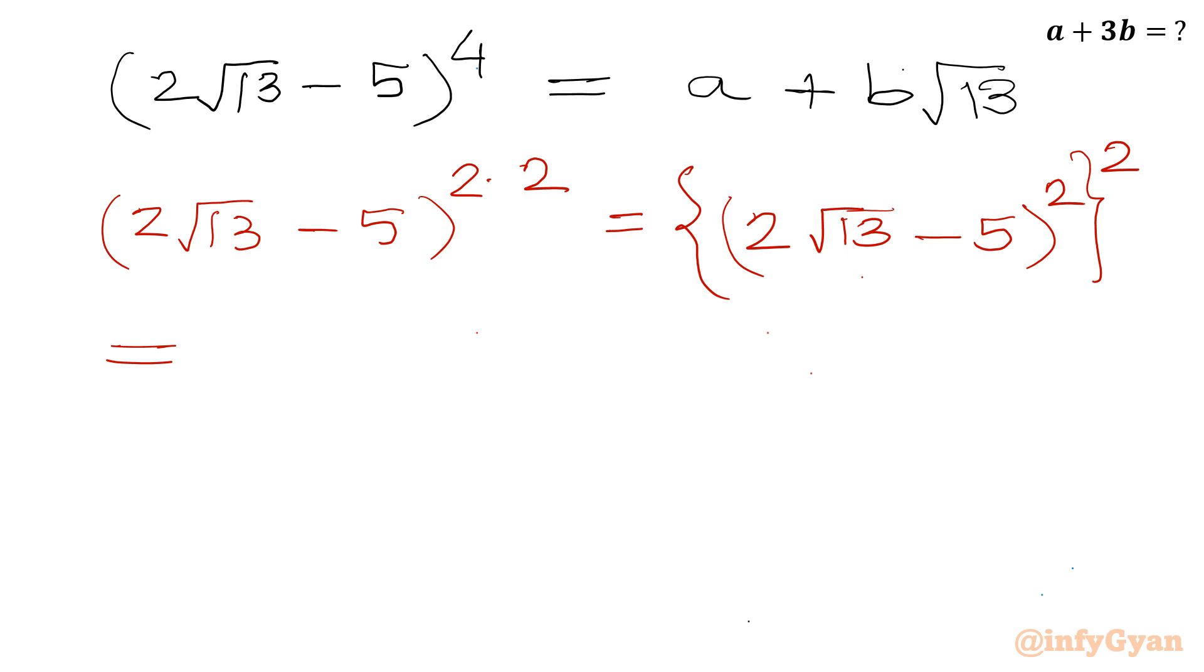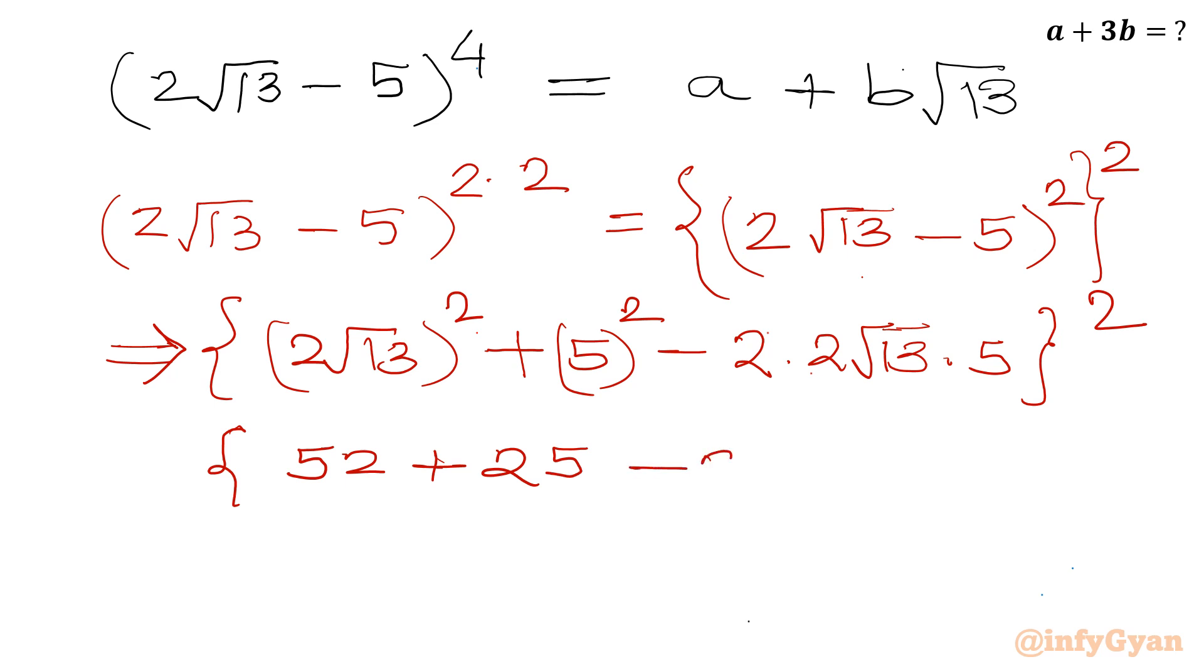Let us consider first square. So I will be writing 2 root 13 whole square. This is a square plus b square minus 2 times 2 root 13 times 5. And then we need to consider squaring again. Let us simplify first. So this will be 52. This will be 25. And this will be minus 20 root 13. Or I can write 77 minus 20 square root 13, and then whole square.